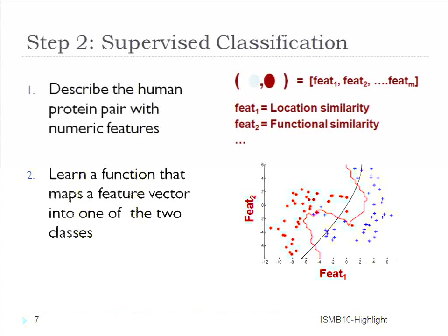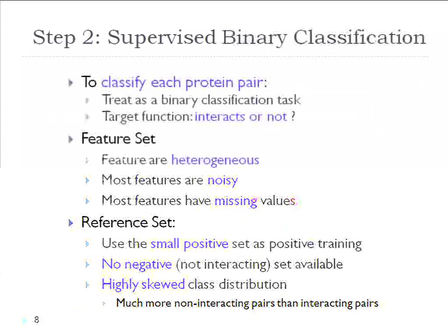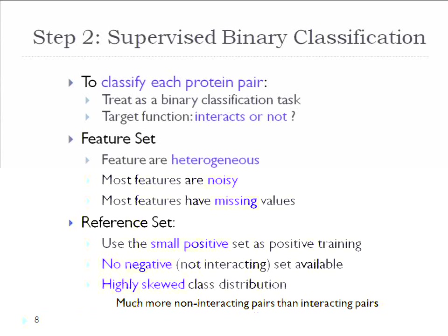For each receptor-to-human protein pair, we represent each as an m-dimensional feature vector — feature one through feature m. If m equals two, we represent all potential pairs as examples in this space. Our ultimate goal is to classify all those examples into two different colors — red or blue — and learn a function to map a feature vector into one of the two classes: interact or not interact. These feature variables come from all different evidence sources.